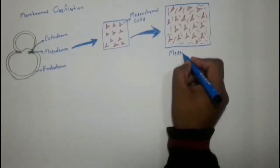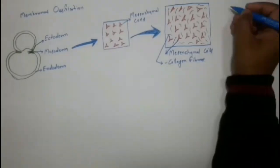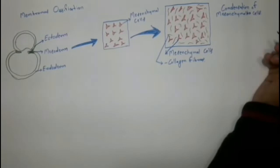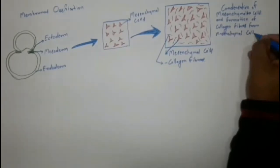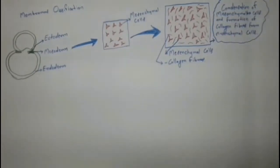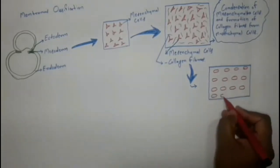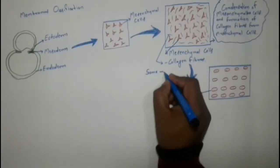Here we see mesenchymal cells and collagen fibers. There is condensation of mesenchymal cells and formation of collagen fibers from mesenchymal cells, forming a mesenchymal model.